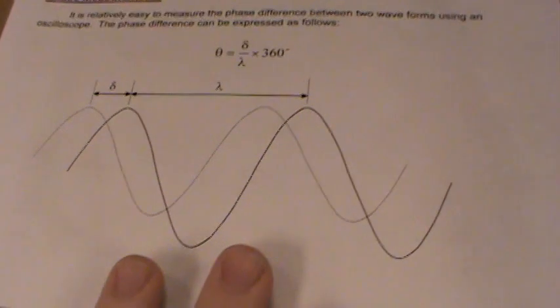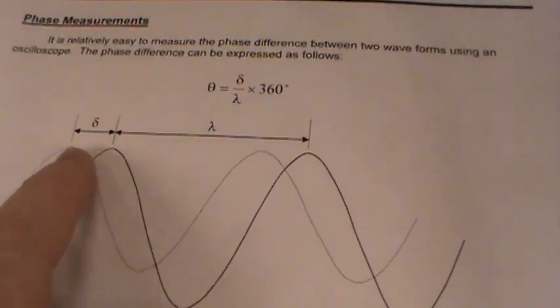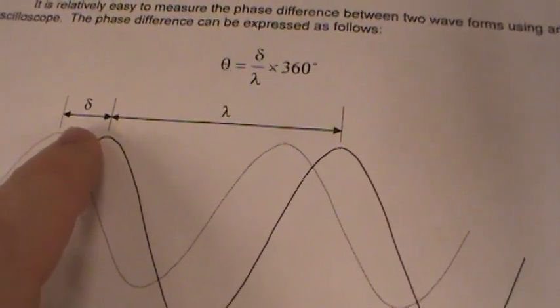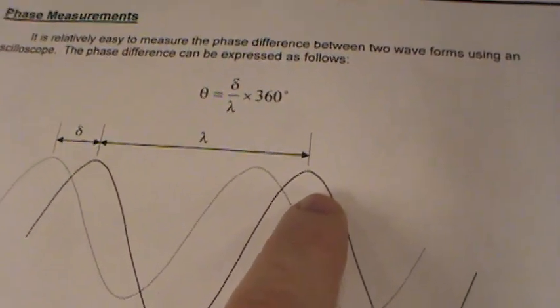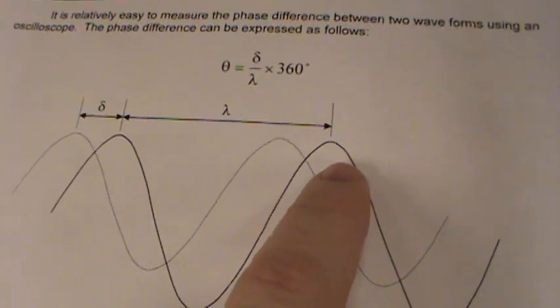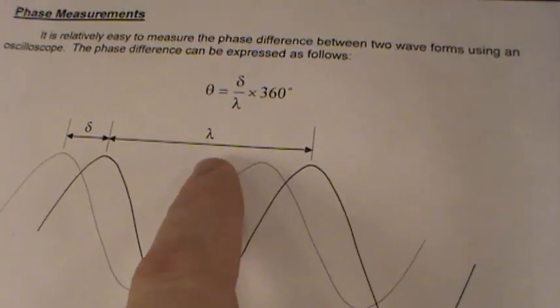What you do with that is then you call this distance from peak to peak lowercase Greek letter delta, and the distance from peak to peak over here in divisions from the oscilloscope screen. That's going to be the wavelength.